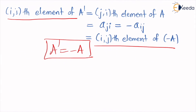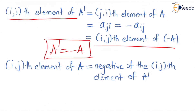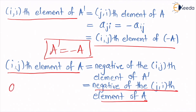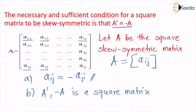We will consider the ijth element of A. The negative of the ijth element of A dash will be equal to the negative of the jith element of A, because A dash and A are transposes of each other. So we have derived that the ijth element of A is equal to negative of the jith element of A. It means aij is equal to negative of aji. This is the condition for a skew symmetric matrix, which means A has to be a skew symmetric matrix. By this way we have proved the given result.